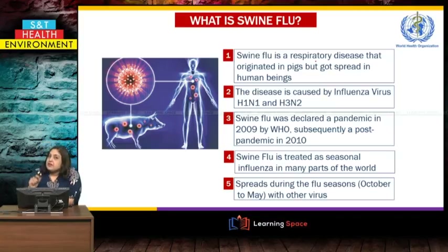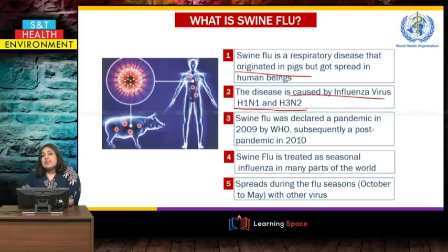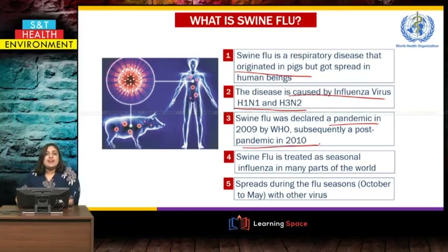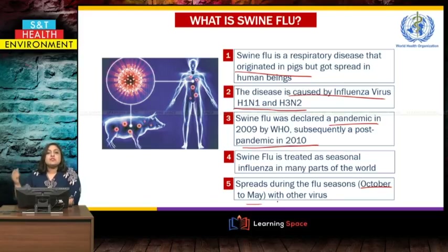Swine flu is a respiratory disease that originated in pigs but quickly spread to human beings. Today the disease is caused by the influenza virus — two strains: H1N1 and H3N2. Swine flu was declared a pandemic in 2009 and a post-pandemic in 2010. It is now treated as a seasonal influenza in many parts of the world and can spread during flu season, October to May, as well as during summer along with other viral infections.